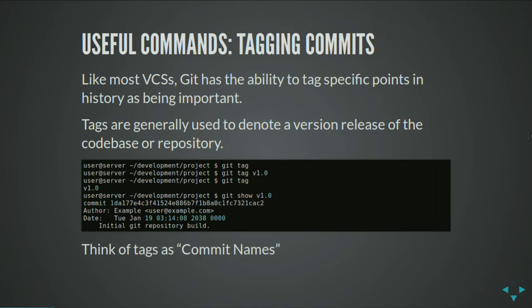Some useful commands. One you may have seen is tagging of commits. Like most version control systems, Git has the ability to tag specific points in history as being important — it's a way to name it. Most commonly used as a version number, you give it a name. Tags are just a bookmark for a hash — giving you another name for a place and time in the repository. Everything that happens in Git gets a unique hash, like 'LDA177E4C', designed to be unique within that repository.